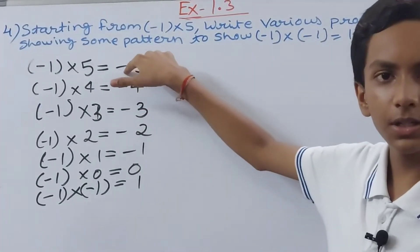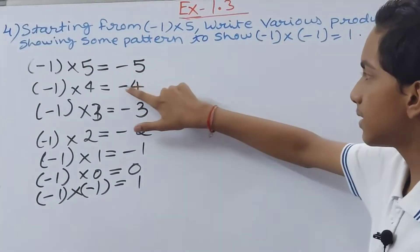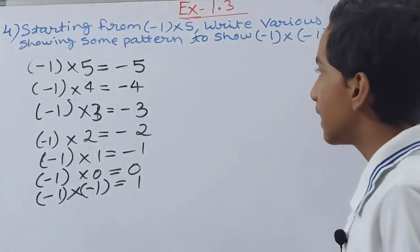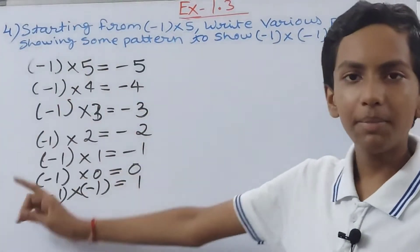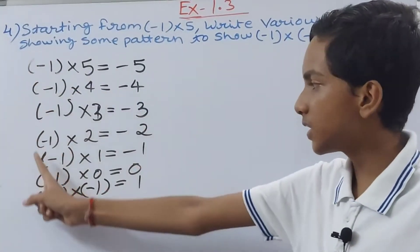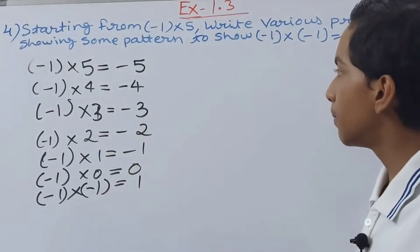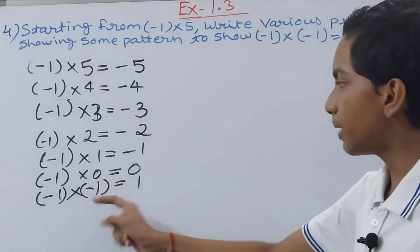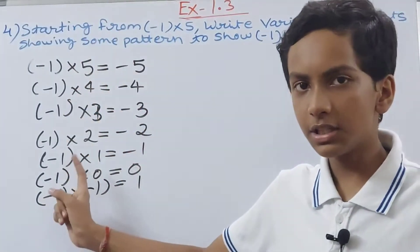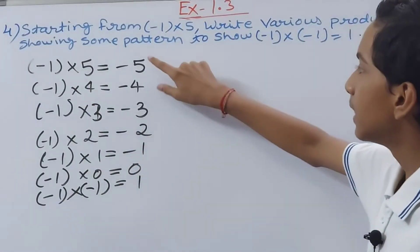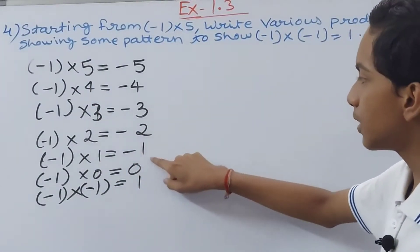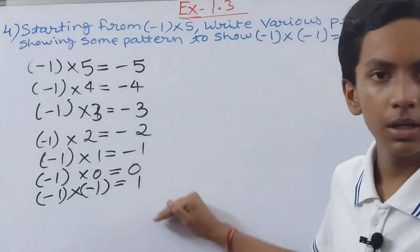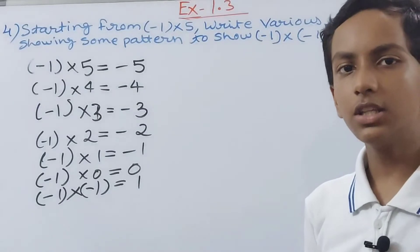See here: -1 is appearing in every single multiplication — that is one pattern. Then 5, 4, 3, 2, 1, 0, -1 is a decreasing order — that is also a pattern. And the answers -5, -4, -3, -2, -1, 0, 1 are in ascending order, from smallest to greatest — that is another pattern.